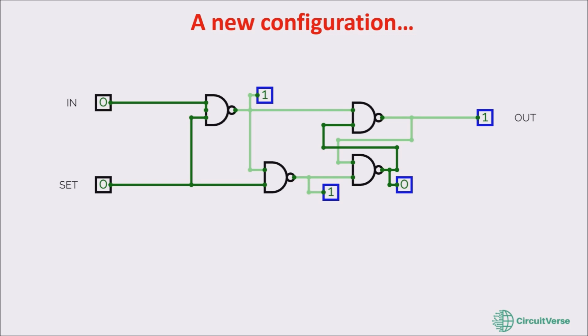If we now put SET to one and IN to zero, we see the output become zero. And if we now turn the inputs IN to one, the output turns one as well. So, if SET is one, the output takes the input value.